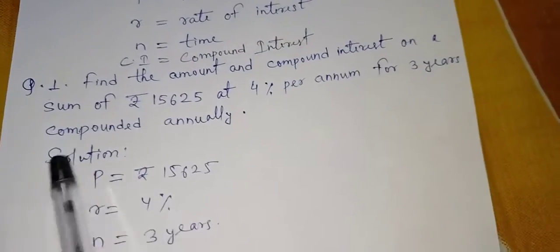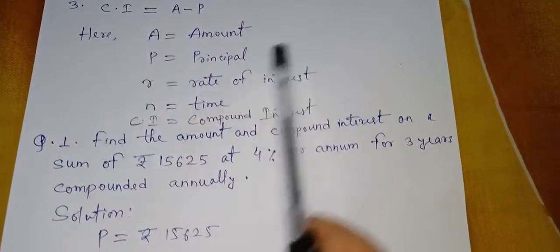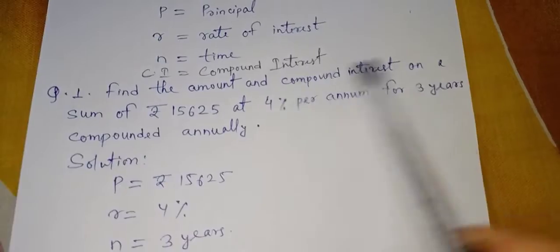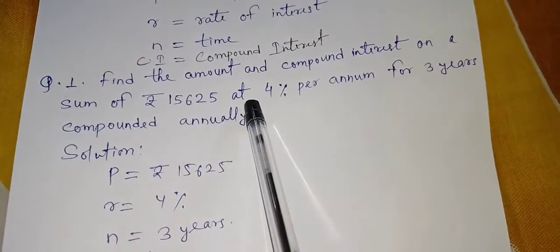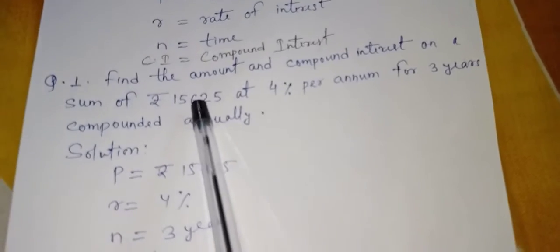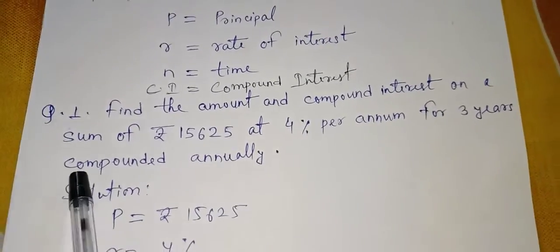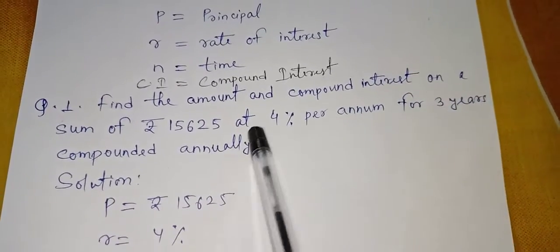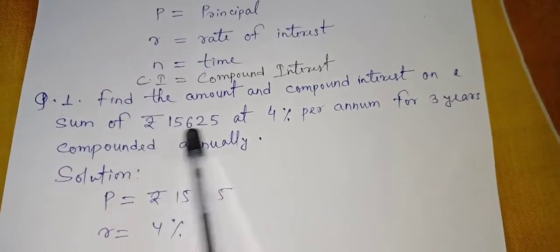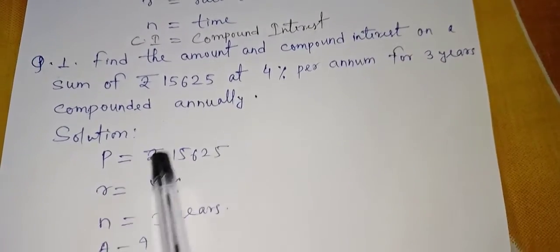So here I take one question for you children. Find the amount and compound interest on a sum of rupees 15,625. This is the sum, that means this is the principal. At 4% per annum for 3 years compounded annually. So time is 3 years.